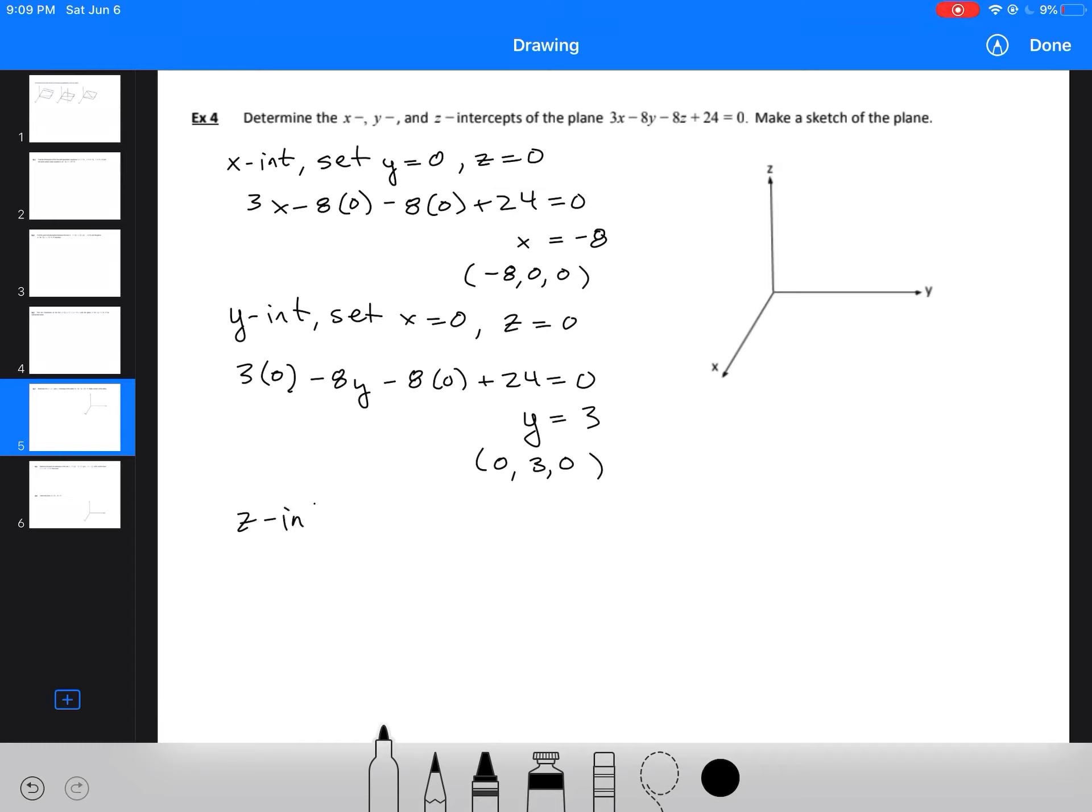For the z-intercept, we're going to set the other two coordinates equal to 0. So we've got 3 times 0 minus 8 times 0 minus 8z plus 24 equals 0. We get z equals 3, and our z-coordinate is (0, 0, 3).